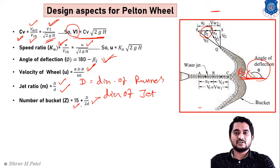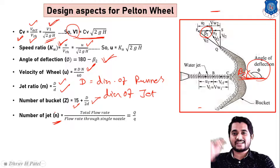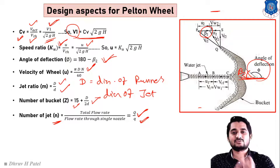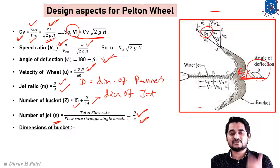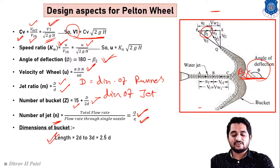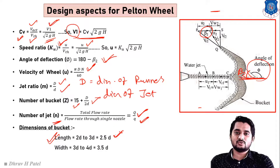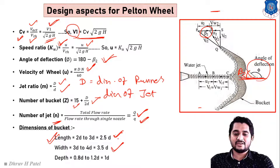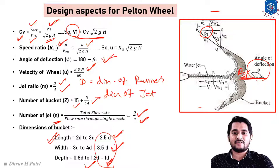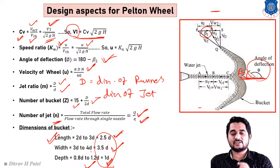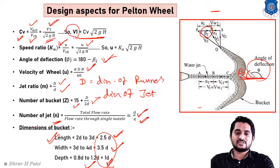The number of buckets equals 15 plus capital D divided by (2 times small d). The total number of jets equals total discharge divided by discharge through one jet. For bucket dimensions, the average values are: length equals 2.5d, width equals 3.5d, and depth equals 1.0d, where small d is the diameter of the jet. These are the basic equations for design consideration of the Pelton wheel turbine.